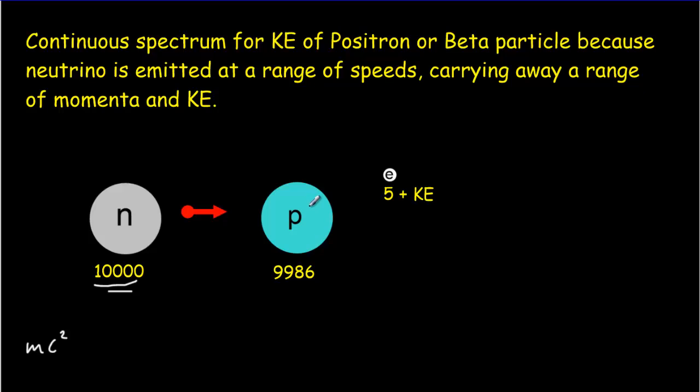A proton has a little less mass, and its mass energy in those units would be 9,986, which means you've got 14 units. The difference between 10,000 and 9,986 is 14, so there's 14 units of energy that aren't accounted for.